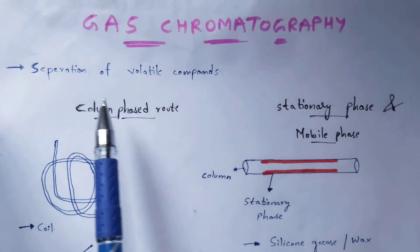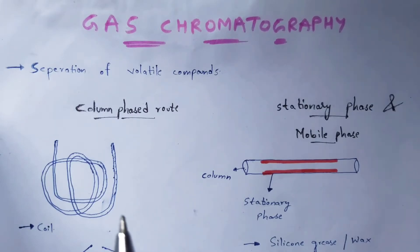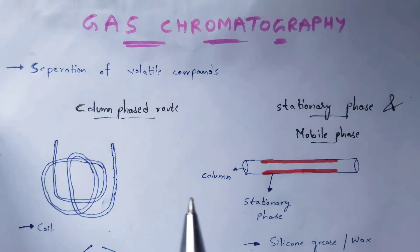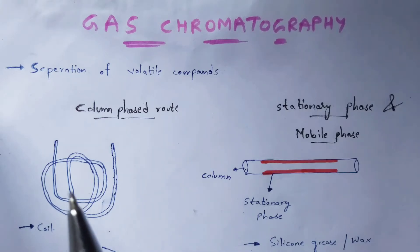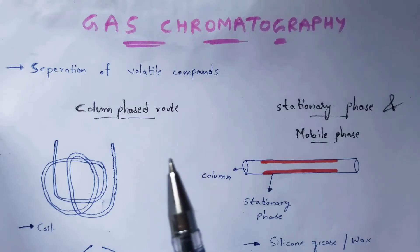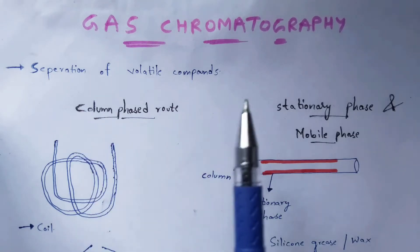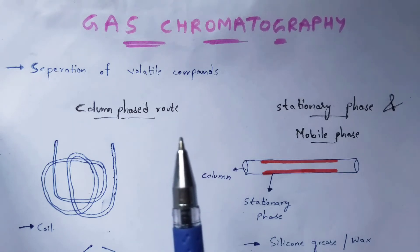Gas chromatography is useful to separate volatile compounds. Volatile compounds are something that have high vapor pressure at room temperature, which correlates with a low boiling point. These are called volatile compounds, and this gas chromatography technique is useful to separate them.